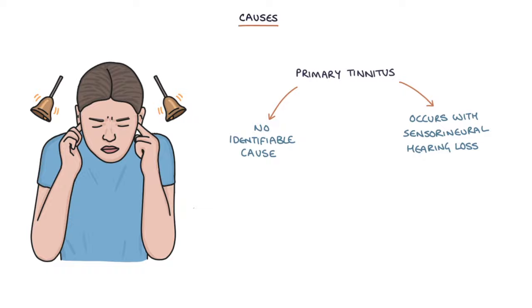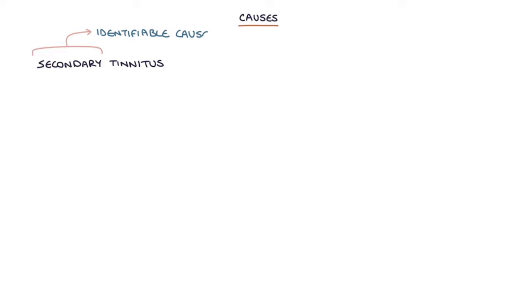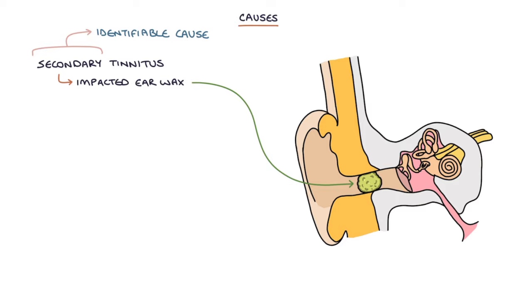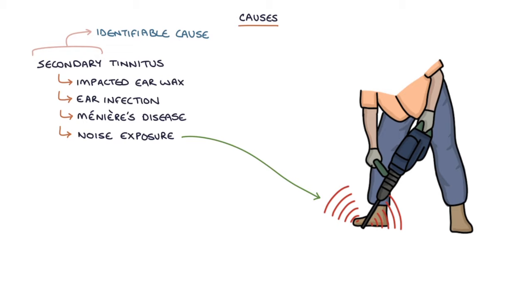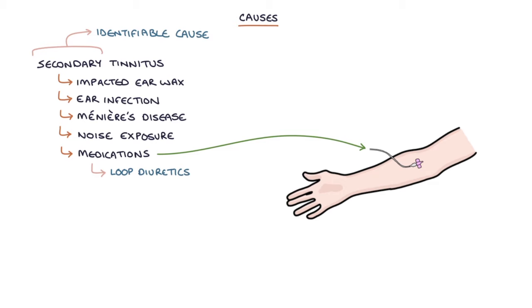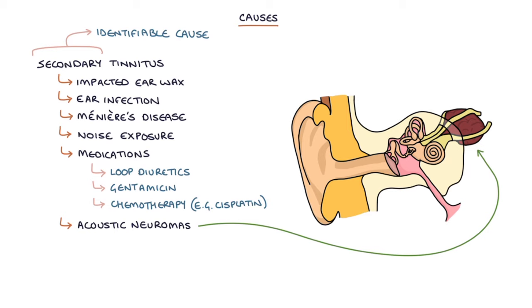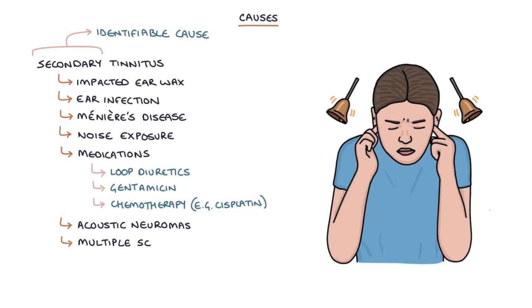Secondary tinnitus refers to tinnitus with an identifiable cause and the causes include impacted earwax, an ear infection, Ménière's disease, noise exposure, medications, for example loop diuretics, gentamicin and chemotherapy drugs such as cisplatin, acoustic neuromas, multiple sclerosis, trauma and depression.